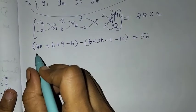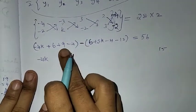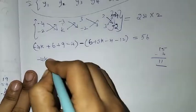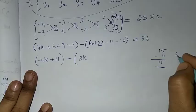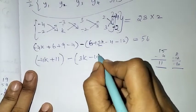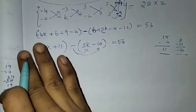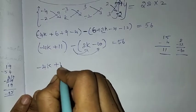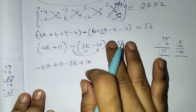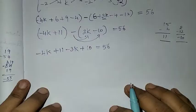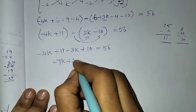Now simplification: we have minus 4k. Remove the bracket. This equals 56. Minus into plus 3k is minus 3k. Minus into minus gives plus 10. Minus 4k minus 3k is minus 7k. 11 plus 10 is 21, which is equal to 56.